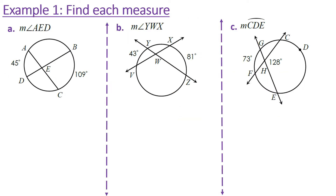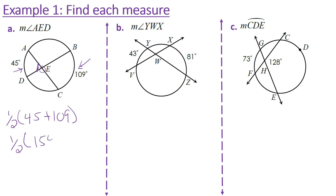In example 1a, we want to find the measure of angle AED. We're given arc AD and arc BC, so the measure of angle AED is one-half of 45 plus 109, because these are the arcs formed by this intersection. 45 plus 109 is 154, and half of 154 is 77 degrees.